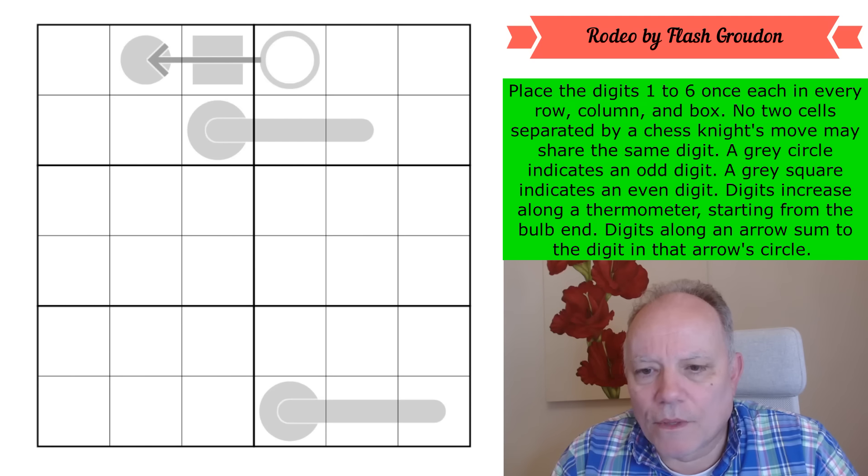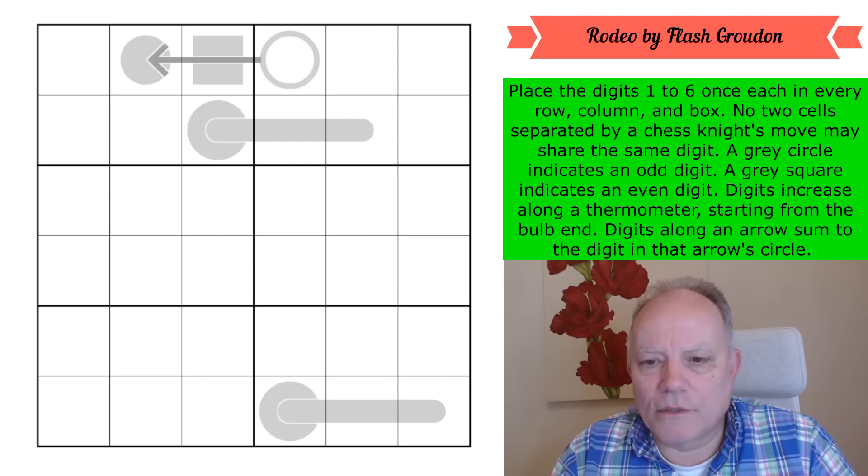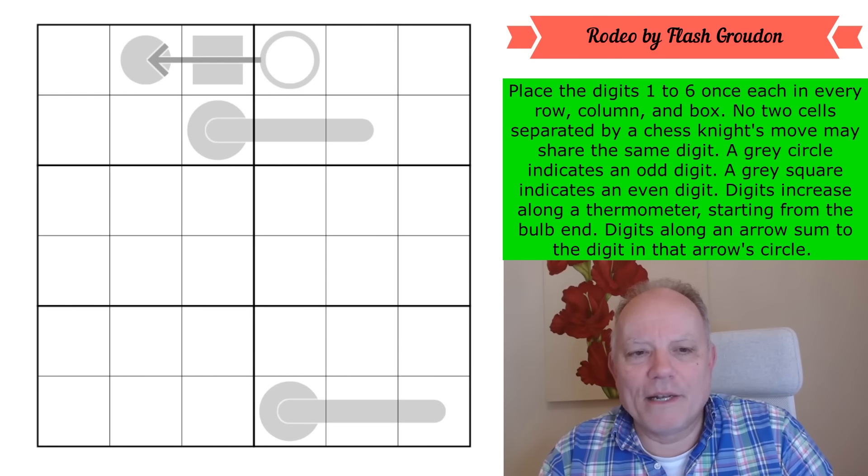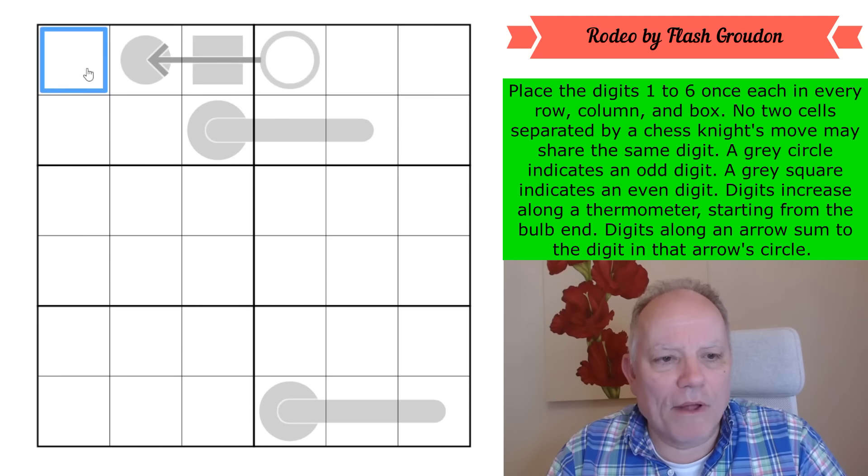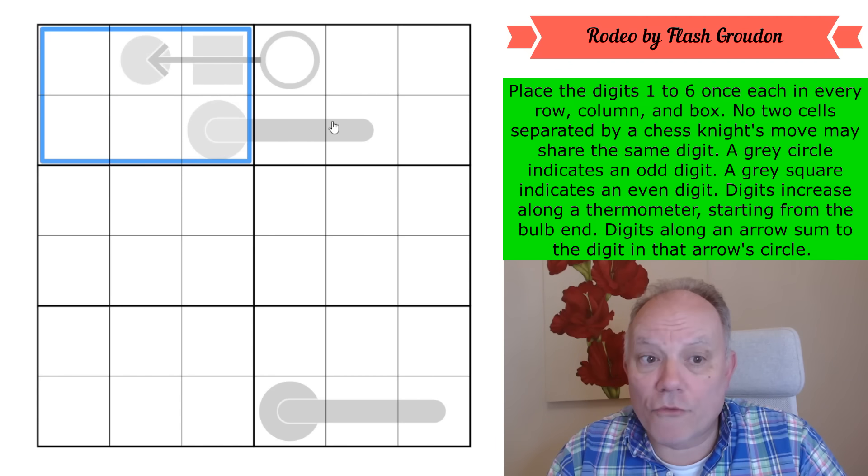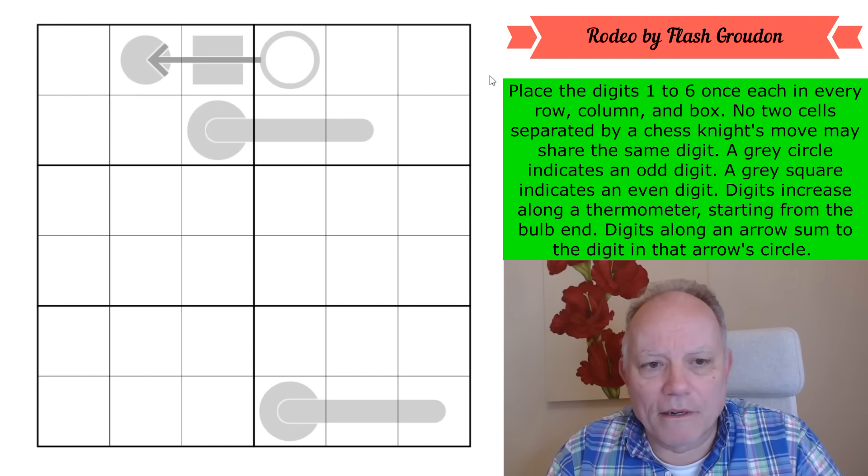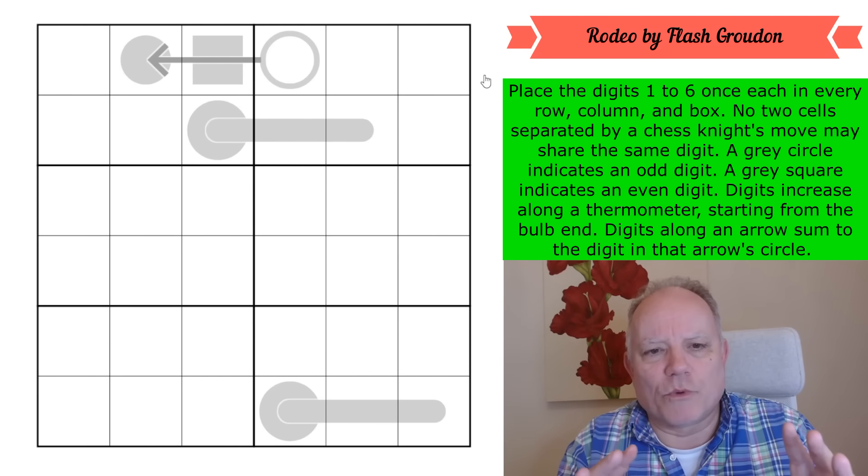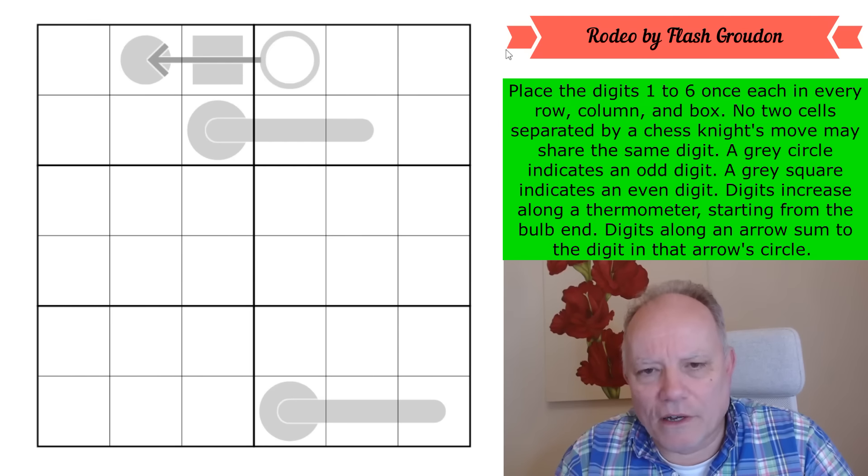Now the rules are as follows: normal 6x6 Sudoku rules, which mean we place one to six in every row, every column, and every 3x2 box.